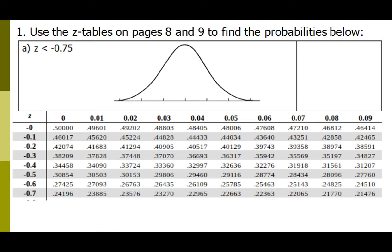For our first problem, z less than negative 0.75: I go to the negative side of the table, go down to negative 0.7, then come over to the column for 0.05, and I get the value 0.2266. We'll use four decimal places on these.